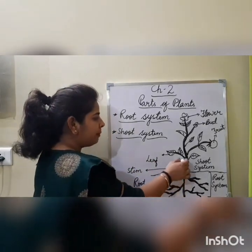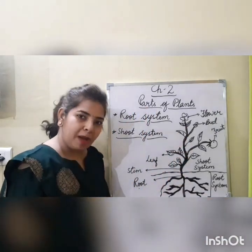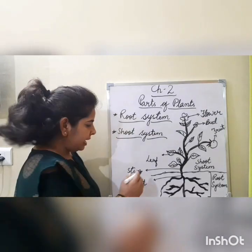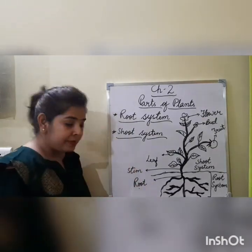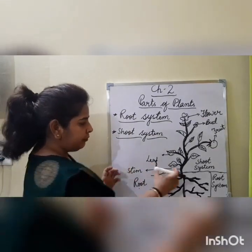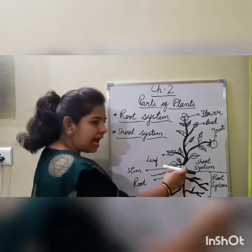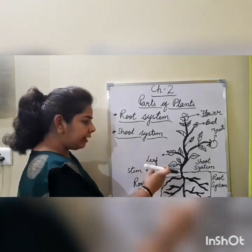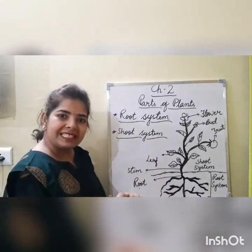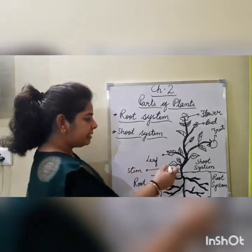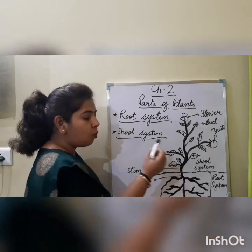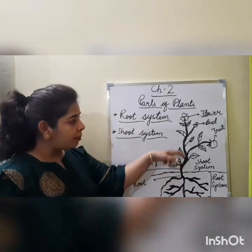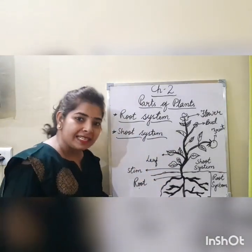Stem will pass the water and minerals — which were absorbed by the root — to the parts of the plant, basically to the leaves. That is the job of the stem. Also, root fixes the plant in the soil. Stem passes water and minerals absorbed by the root to the plant's parts.